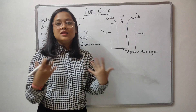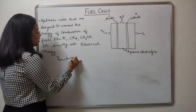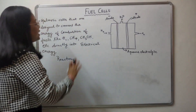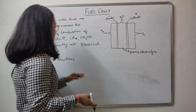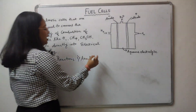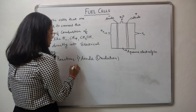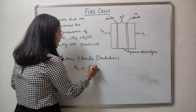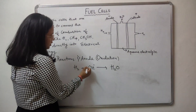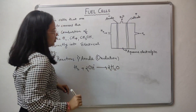Now we move to the reactions. You need to know three reactions: at the anode, at the cathode, and the overall reaction. At the anode, an oxidation reaction occurs: H2 reacts with hydroxide ions (OH⁻) to give water. Balancing gives 2H2 + 4OH⁻ → 4H2O, and adding 4 electrons on the right balances the charge, giving the oxidation half-reaction.